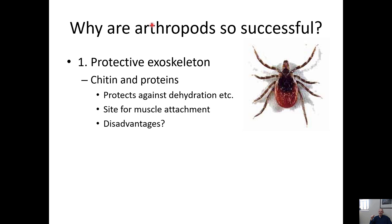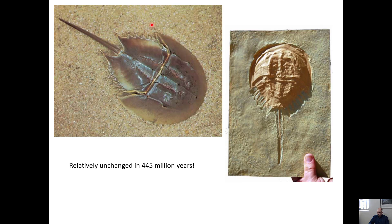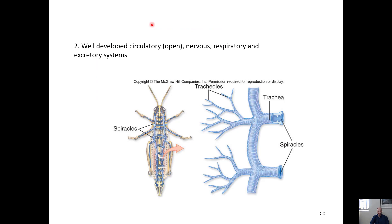The chitin exoskeleton protects against dehydration and provides places for muscles to attach. The disadvantage is that you have to shed it periodically when you grow and secrete a new one, making you temporarily vulnerable. It can also be heavy as you get bigger. But overall it's worked out well — some organisms like the horseshoe crab have remained relatively unchanged over the last 500 million years. Their exoskeleton also fossilizes well, so we know a lot about their past.